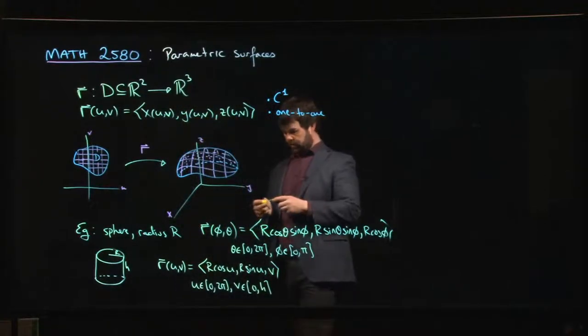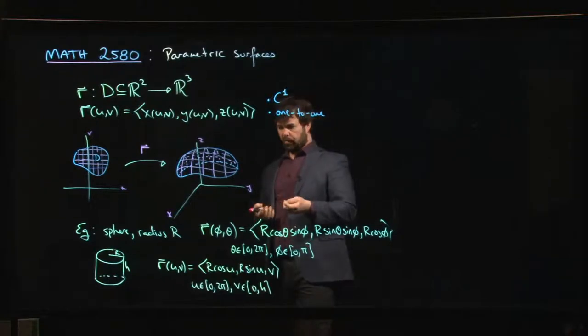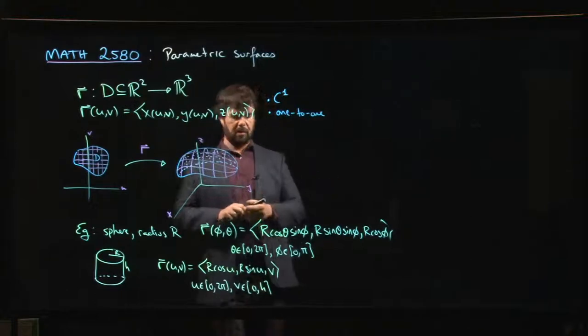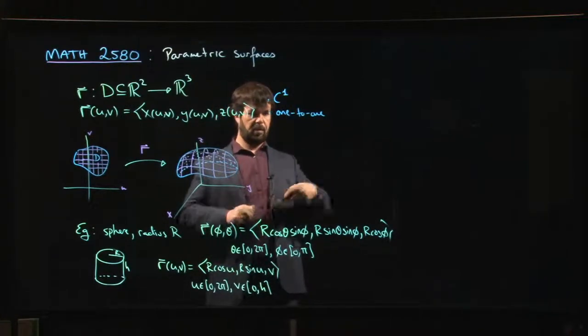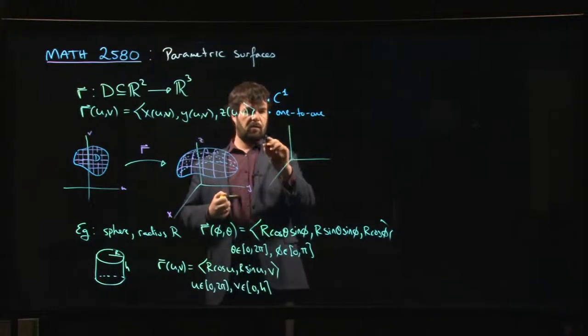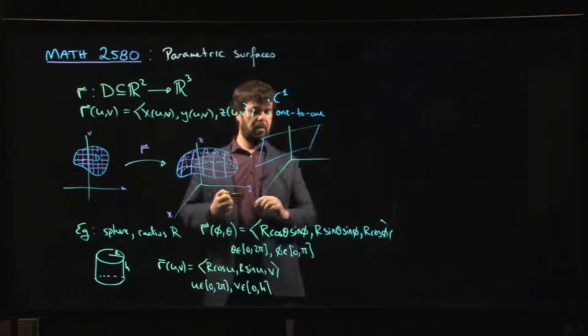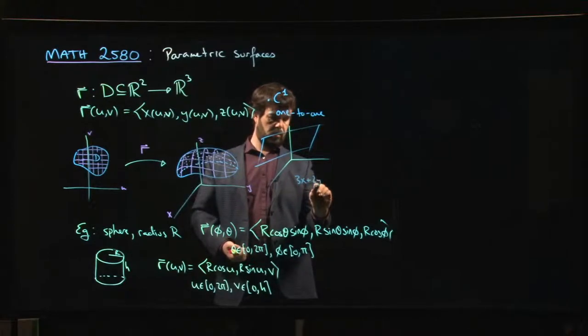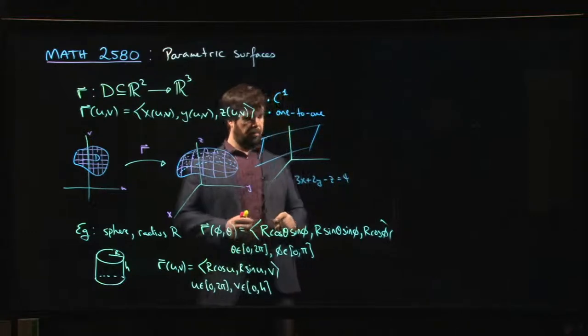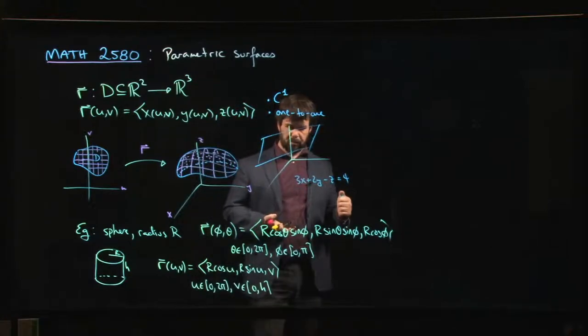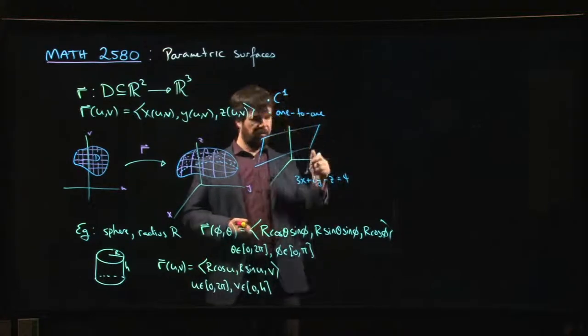You could also do planes. Let's say you have a plane sitting in space with some equation like 3x + 2y - z = 4, and you want to think how do I parameterize this thing. The standard way is to choose two of these to be parameters.